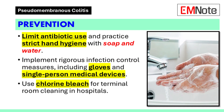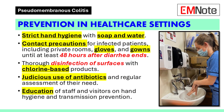Prevention strategies include limiting antibiotic use, practicing hand hygiene, and implementing infection control measures in healthcare settings. Washing hands with soap and water is effective at removing spores, whereas alcohol-based hand rubs are not. Rigorous infection protocols such as wearing gloves and using single-person medical devices are important. Terminal room cleaning with products containing chlorine bleach can help destroy spores.